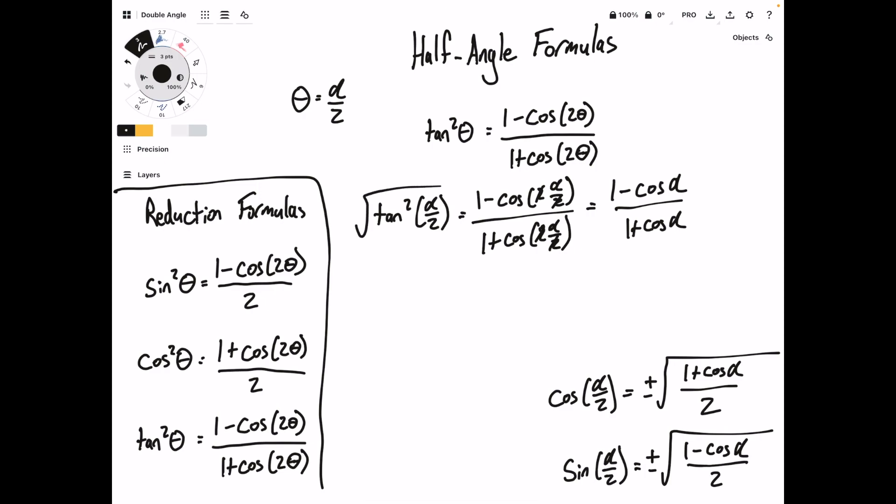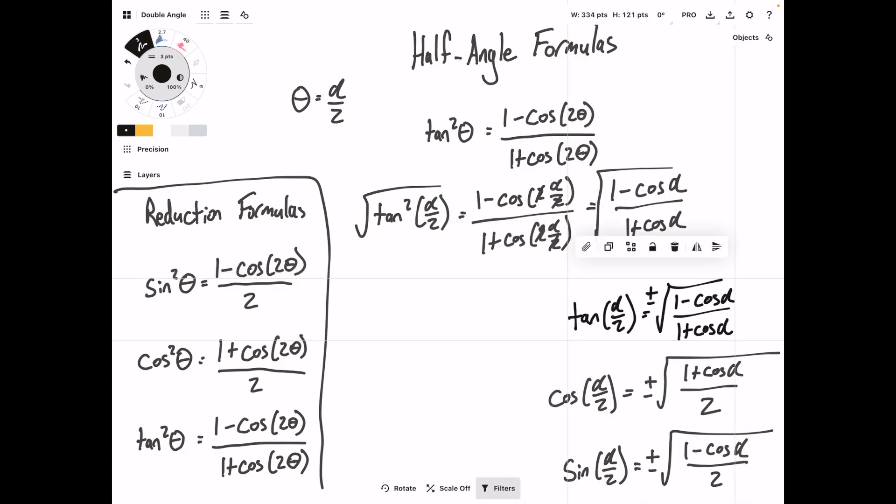Take the square root here, and we have tan of alpha over 2 is equal to plus or minus the square root of 1 minus cosine alpha over 1 plus cosine alpha. And so here is the half-angle formula for tangent.